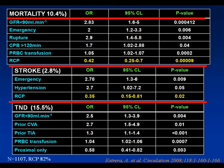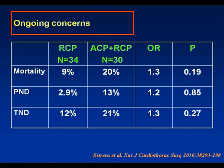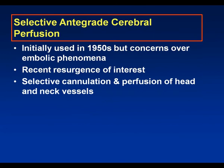The one large center continuing to use retrograde cerebral perfusion is the Houston group of SAFI, who demonstrated that RCP produced a significant reduction in mortality and stroke risk, but no effect on transient neurological deficit risk. The same group have recently compared retrograde cerebral perfusion with a combined technique of initial retrograde followed by antegrade perfusion, but paradoxically saw higher mortality in the antegrade group.